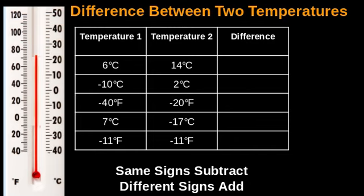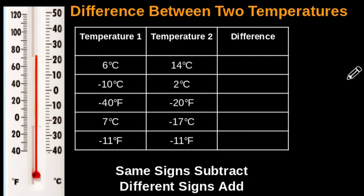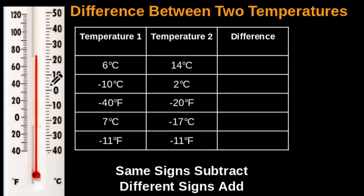Starting off with a thermometer, let's see how we can figure out the difference in temperature between 6 degrees Celsius and 14 degrees Celsius. Before you begin to use a thermometer to find the difference, you have to figure out how your thermometer was graduated. You need to be able to know what each line reads on your thermometer — does each line read increments of one, or increments of two? To figure that out, let's start counting from increments of one and see if that's how this thermometer was graduated.